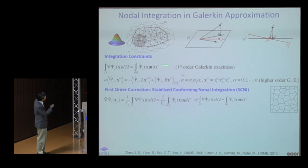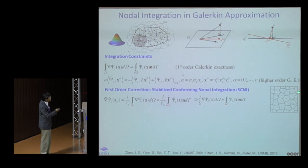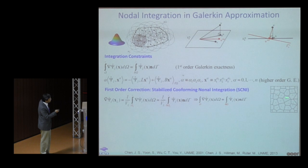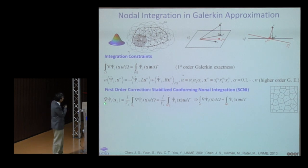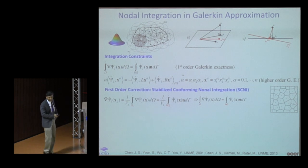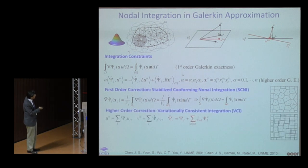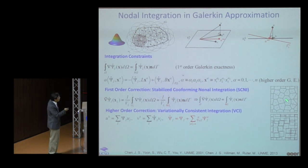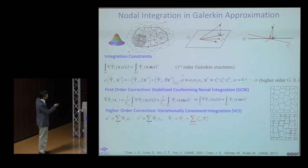To pass the linear patch test, you partition the domain into smoothing zones, take the average gradient of the test function in each zone via a boundary integral, and if all smoothing zones are conforming, the divergence condition is satisfied exactly. This assumed strain approach recovers the quadratic L² convergence rate with linear basis. For fragmentation problems, however, simpler circular or rectangular smoothing zones are needed.